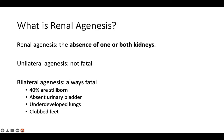Unilateral renal agenesis is more common with IUGR and often results in premature birth. It's also more common when a mother is carrying more than one baby. The remaining kidney will enlarge to carry out the function normally done by two kidneys.